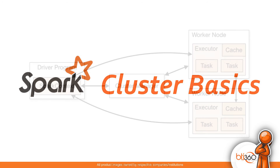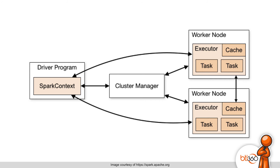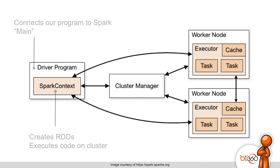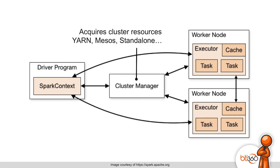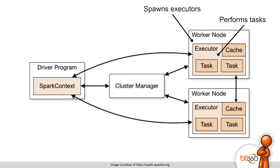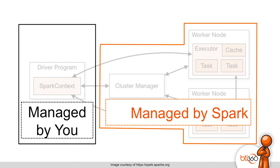Let's talk about the Spark cluster. You have a driver program, a cluster manager, and worker nodes. The Spark context is the main entry point into your program — this is where you control everything and where all your programs are run. The cluster manager handles everything on the right side, so you don't have to worry about managing tasks and executors. We have a couple of different cluster managers: Mesos, which was the original implementation, Yarn, and also the Spark standalone cluster manager. The Spark context requests cluster resources from the cluster manager, and on the worker nodes, executors respond and perform the tasks of the RDD. The right side is managed by Spark and the left side is managed by you.